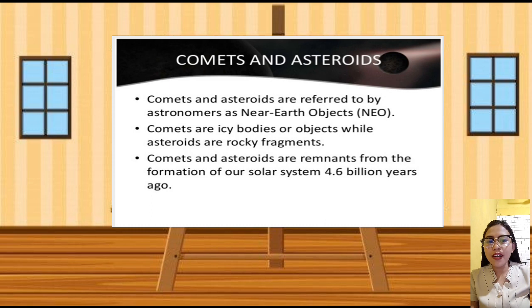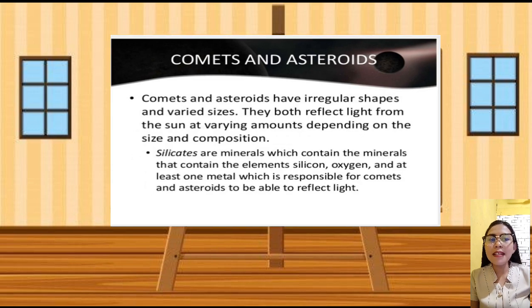Comets and asteroids are remnants from the formation of our solar system 4.6 billion years ago. Comets and asteroids have irregular shapes and varied sizes.